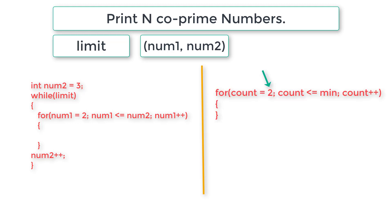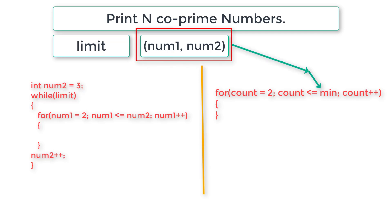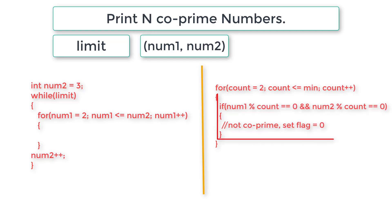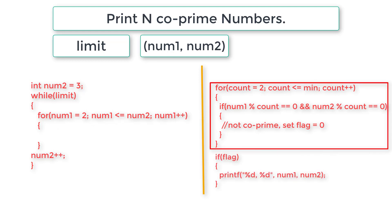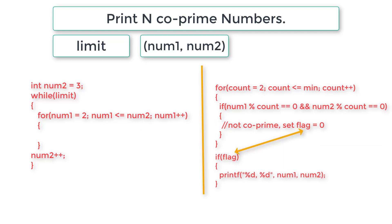I'll take count starting at 2 - we can't start at 1 because 1 divides every number. This inner for loop iterates while count is less than or equal to min(num1, num2) - whichever is smaller is copied to min. Inside this for loop, we check if num1 and num2 are both perfectly divisible by count. If true, we set flag=0 meaning they are not co-prime.